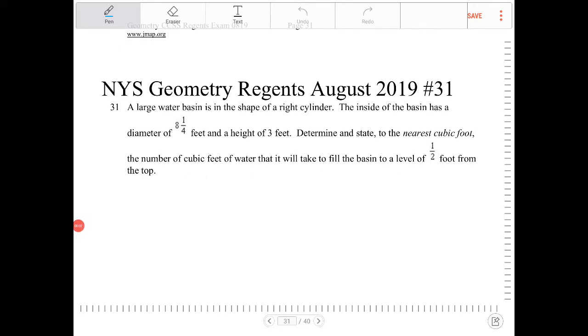A large water basin is in the shape of a right cylinder. The inside of the basin has a diameter of eight and a quarter feet and a height of three feet. Determine and state to the nearest cubic foot the number of cubic feet of water that it will take to fill the basin to a level of half foot from the top.